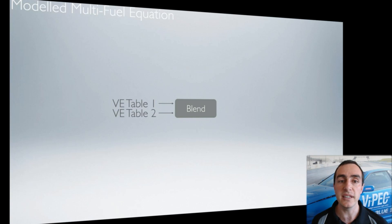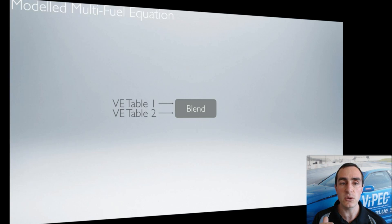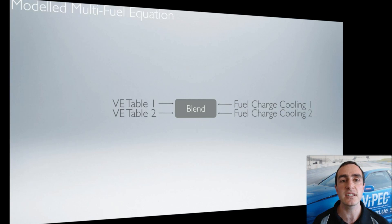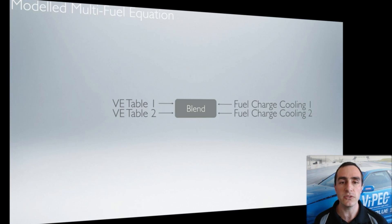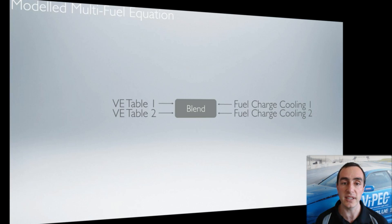The ECU uses the current blend ratio to work with two volumetric efficiency tables — one for the primary fuel (petrol) and one for the secondary fuel (ethanol) — mixing them according to the current blend ratio. The same thing happens for fuel charge cooling. Different fuels have a different charge cooling effect on the intake air, so the ECU mixes those two charge cooling numbers based on the current blend to select the correct value, which gives better fueling accuracy.